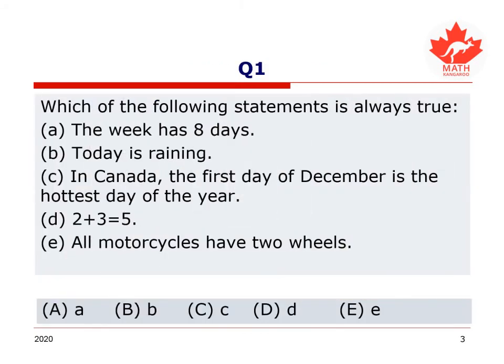Question one: Which of the following statements is always true? Is it A, that the week has eight days; B, that today is raining; C, that in Canada the first day of December is the hottest day of the year; D, that two plus three equals five; or E, that all motorcycles have two wheels?